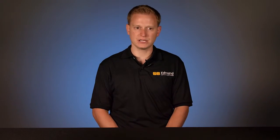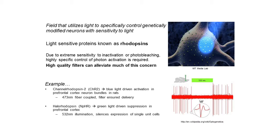Last but not least, optogenetics, one of the most advanced and newest fields in the world of optics and biomedical engineering. It is a field that ultimately uses light to specifically control genes and neurons that have been more or less embedded with photoreceptors from the eyes. So these photoreceptors are light sensitive proteins known as rhodopsins. Due to extreme sensitivity of inactivation and photobleaching, these are highly specific and highly controlled. So you need high quality filters such as the ones I described before.